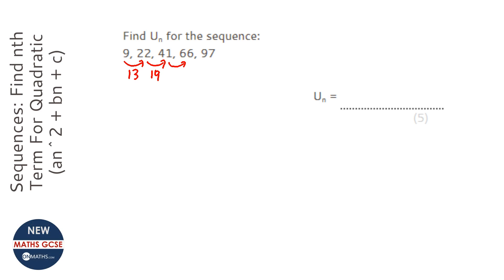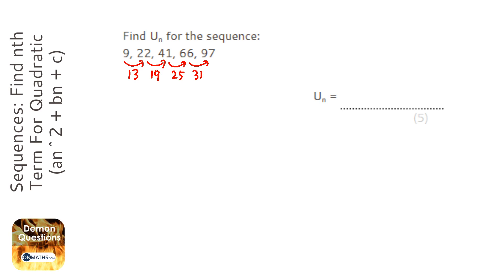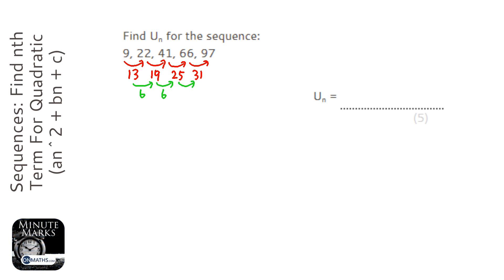That will be 25, and then this will be 31. Whenever you have a sequence that's not going up by the same amount, the next step is to work out what the differences are going up in — the difference of the differences. That's 6, and this one's 6, and this one's also 6. So if the difference of the differences is always the same, then you've got yourself a quadratic sequence.